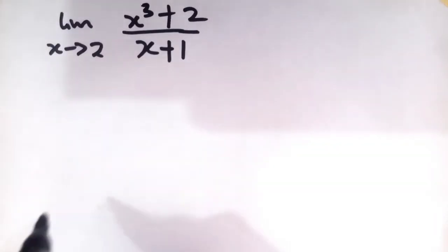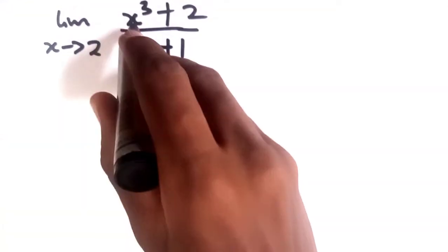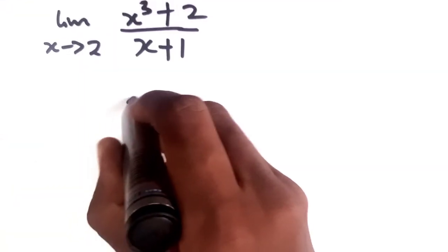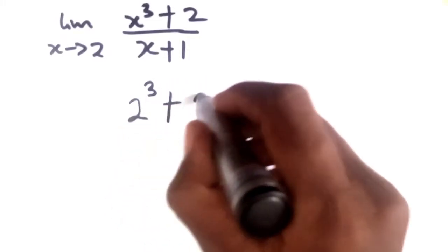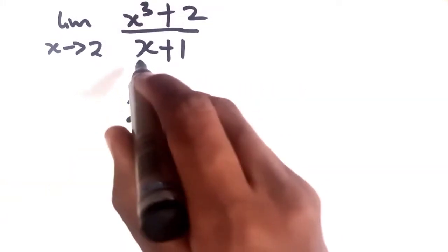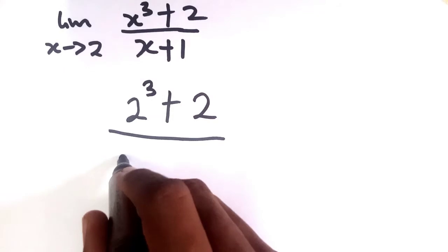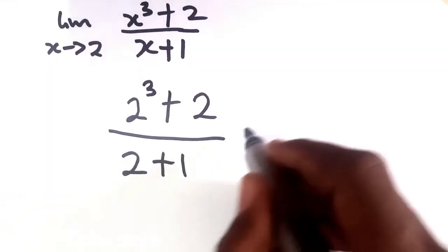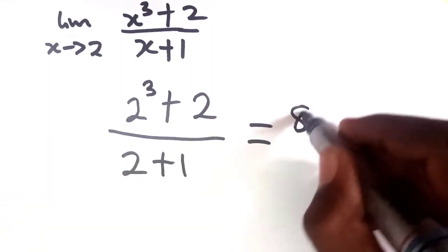So that's what we're going to do straight ahead: we'll have 2 raised to the power of 3 plus 2 over 2 plus 1. So 2 raised to the power of 3 is 8.